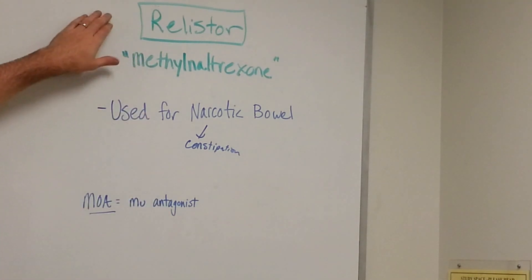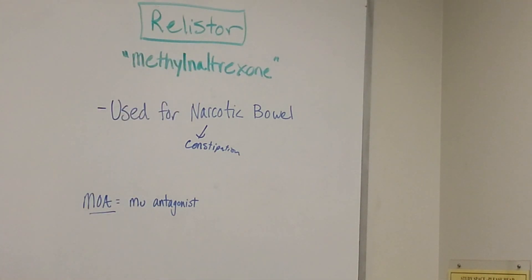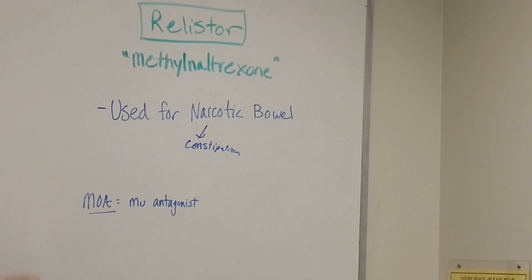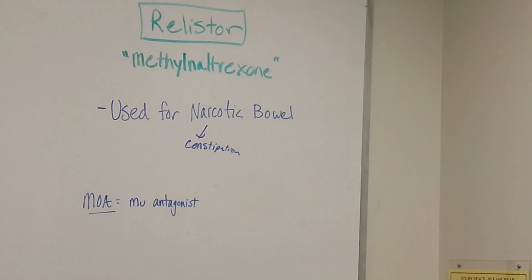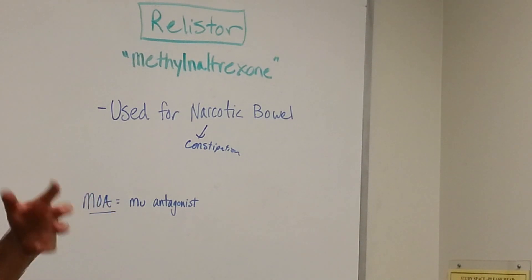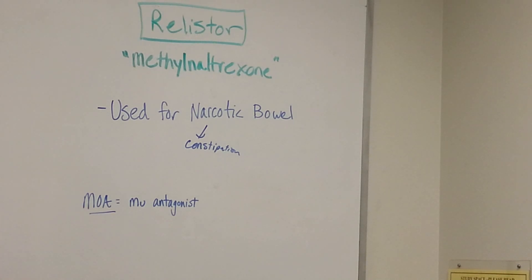The key thing about Relistor, or methyl naltrexone, is that it's peripheral — meaning it's not going to affect the brain and the spinal cord. This is important because your bowels lie outside of the brain and spinal cord, so the drug acts peripherally.